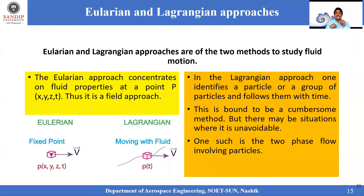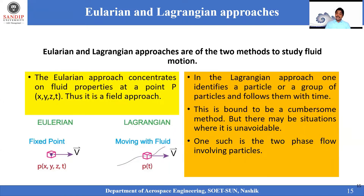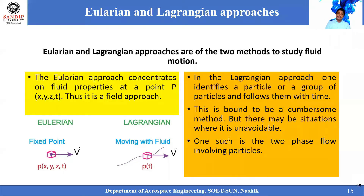In the Lagrangian approach, the reference point moves along with the particle with respect to time. In the Eulerian approach, X, Y, Z, and T are all variables and it monitors at a fixed point. Whereas in the Lagrangian approach, the point itself is moving with respect to time.